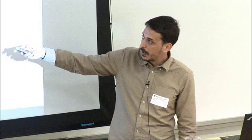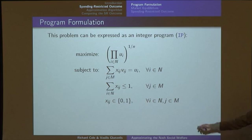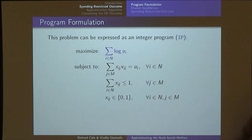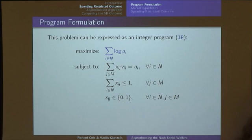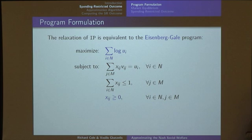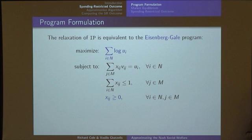Formally, the problem we want to solve is to maximize the geometric mean subject to additive valuations, without over-allocating any item, with xij between 0 and 1. The first observation is if you take the log of the objective, you get the problem of maximizing the sum of the logs of the utilities, which is convex. And if you relax the integrality, you get the Eisenberg-Gale program, which has been well studied and we can solve it.